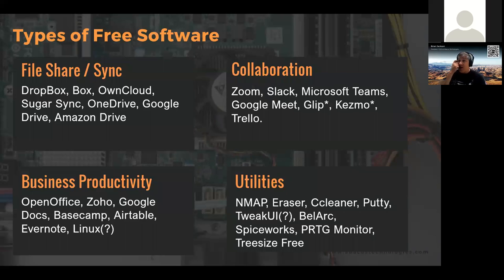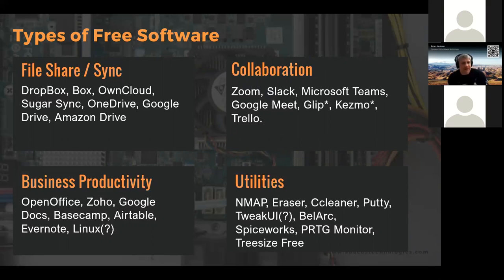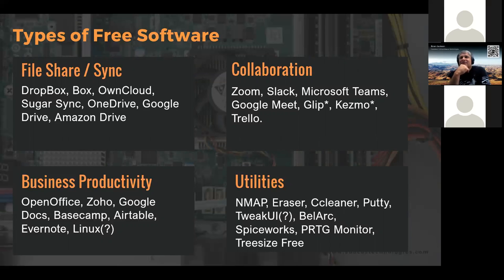I just went out online and threw a bunch of them up here — there are a lot of them out there. For personal use, I've used Dropbox, Amazon Drive, and obviously Zoom. Trello is a great tool we use in the office. Open Office — I've used it, not a huge fan; you just kind of get used to running Microsoft's version and it's usually a few years behind. Evernote's a good one. Spiceworks has a lot of moving pieces but it's a good tool. Tree Size Free, Putty, CCleaner — all those tools.